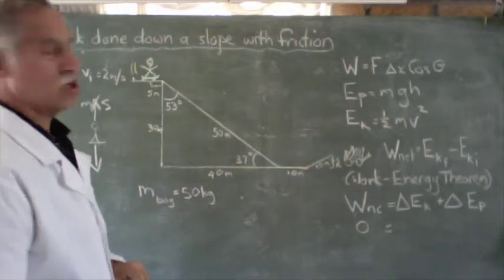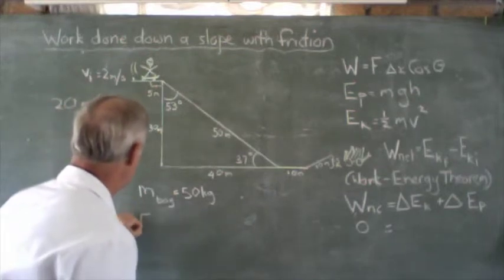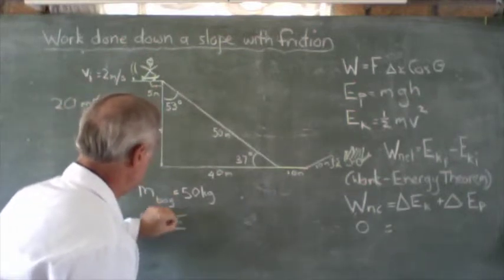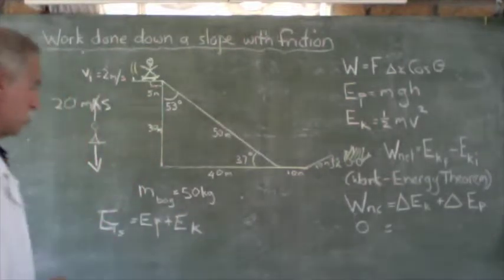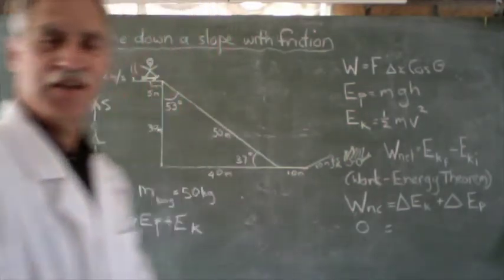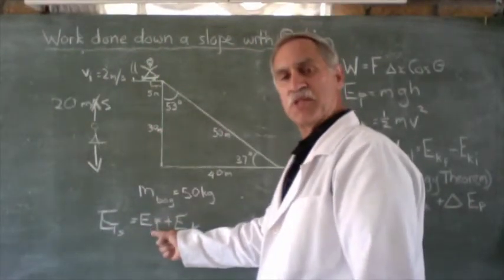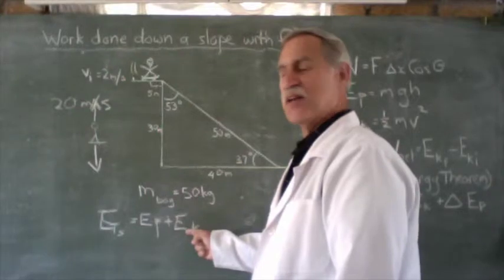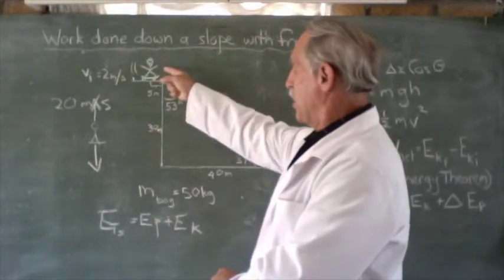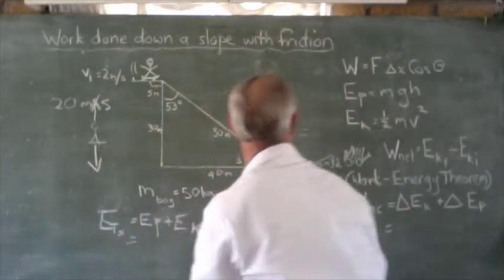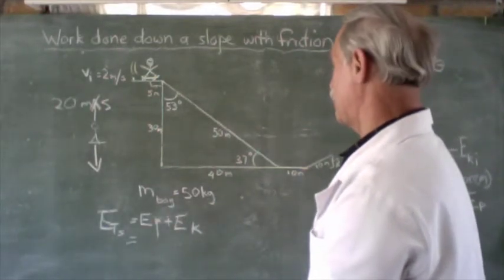So, his mechanical energy to start off with is going to be equal to... So, let's start here. His EP plus his EK is going to be equal to his energy total at the start. So, at the start, his energy total is going to be the sum of his potential energy and his kinetic energy. So, let's work out what is his energy at the start. And we could say we've got our formula for EP and our formula for EK. So, let's work out his total energy at the start.